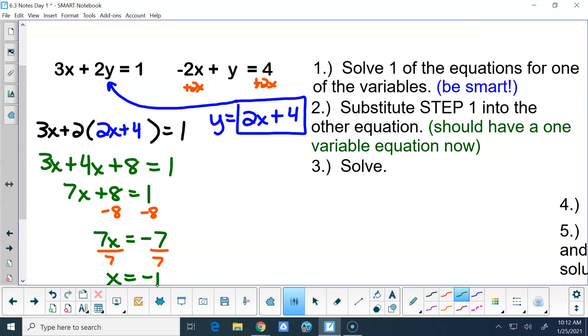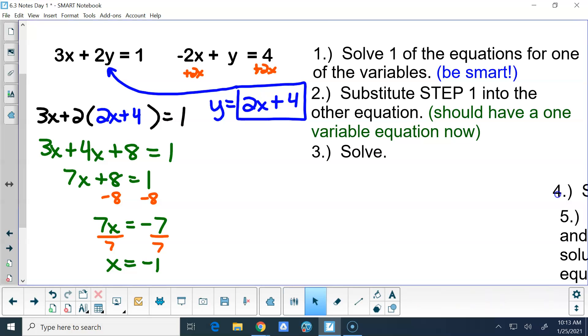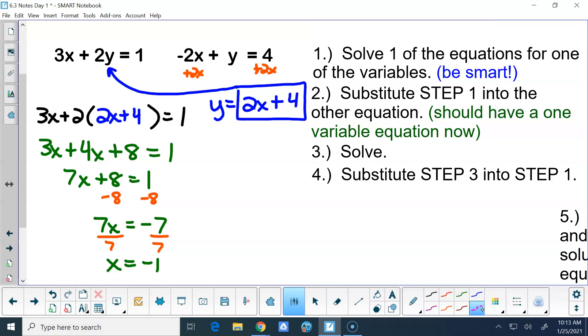Then our next step is now we're going to substitute what we just had, what we just solved for. We're going to substitute that back into, and now you've got 3 choices where you can put it into. You can put it into what you solved for in step number 1. You can put it back into either your first original equation or your second original equation. It doesn't matter which of those equations you plug it back into. 2 times negative 1 is negative 2, plus 4 is 2.